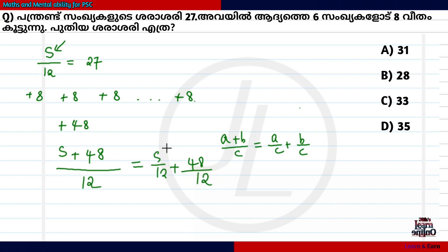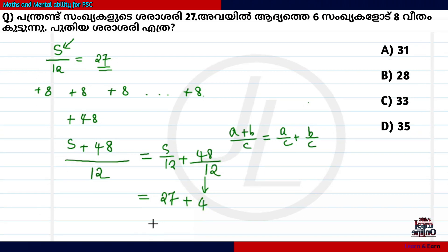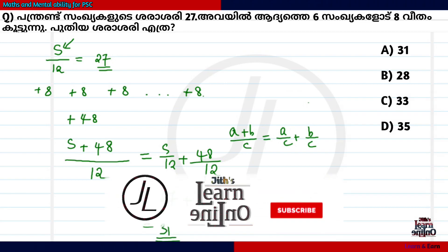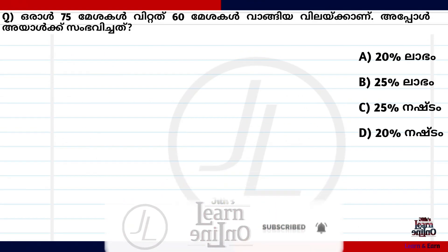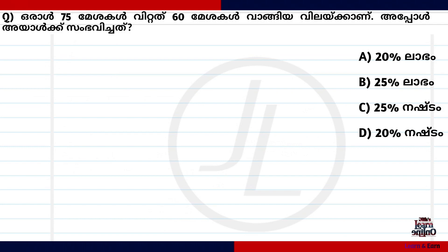S divided by 12 plus 48 divided by 12. S divided by 12 is 27. S plus 48 divided by 12. This equation — A was 32. This is one of the exceptions.